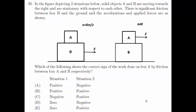The figure depicting two situations below, solid objects A and B are moving towards the right and are stationary with respect to each other. There is significant friction between box B and the ground and the accelerations and applied forces are as shown.